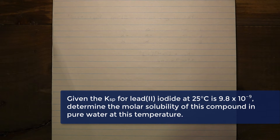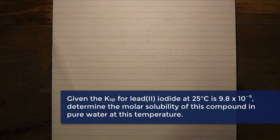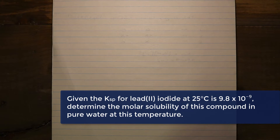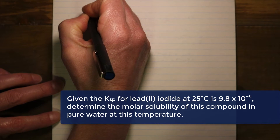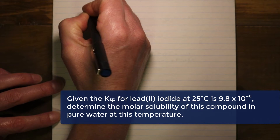The compound we're going to use is lead(II) iodide. It has a relatively low solubility because both lead compounds and iodide compounds generally tend to have low solubilities. This one is no exception — we can see from its Ksp of 9.8 times 10 to the negative 9 that it is in fact fairly low.